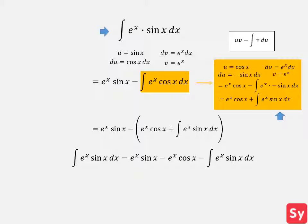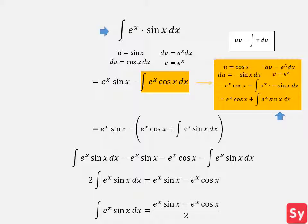Now let's simplify the answer. We can see that we can use algebraic manipulation to solve this integral. We add the integral of e to the x times sine of x dx to the left side, and then divide the equation by 2. This gives us our answer: e to the x times sine of x minus e to the x times cosine of x, all over 2.